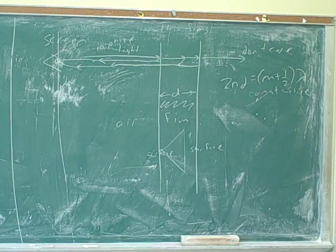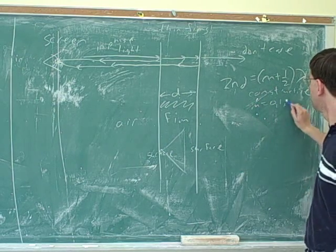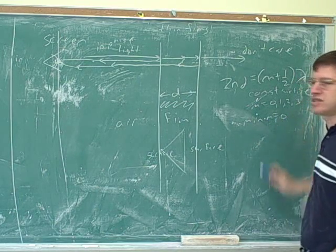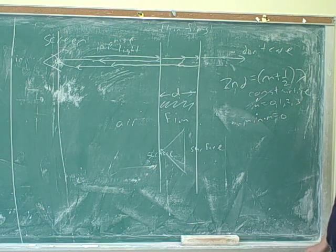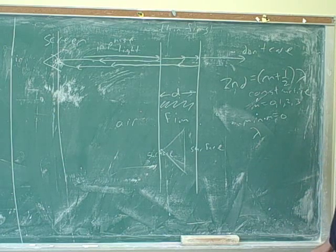M is just from, again, is our index. M here is again from 0, 1, 2, 3. So the minimum M is 0. When M is at its minimum, would lambda be at a maximum or a minimum?